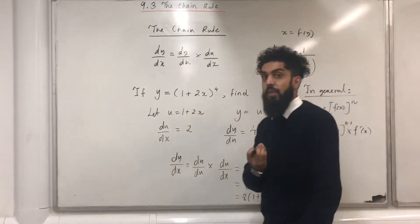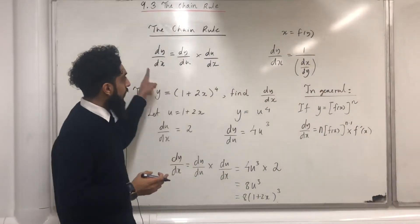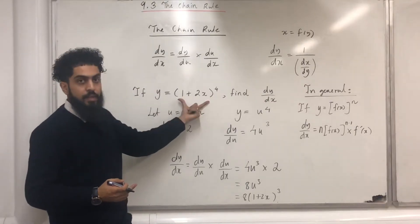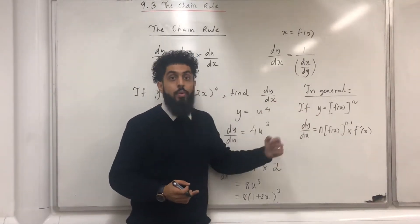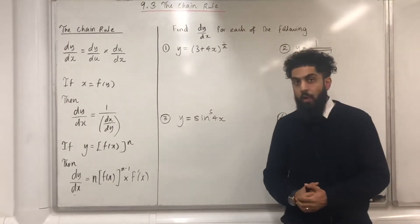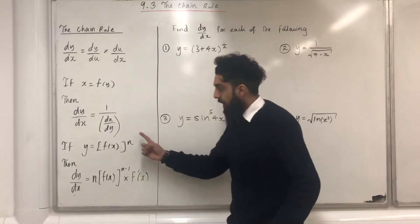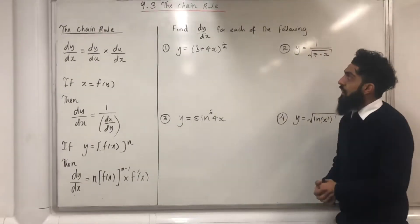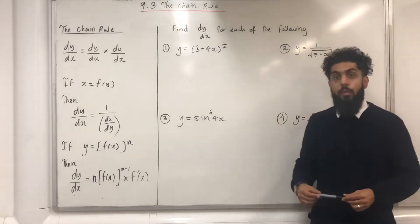So you don't have to use the chain rule to differentiate something like this — you can just apply this particular rule to quickly differentiate. Now I'm going to be looking at more questions in which we can apply this rule. Find dy over dx for each of the following. Question number 1.